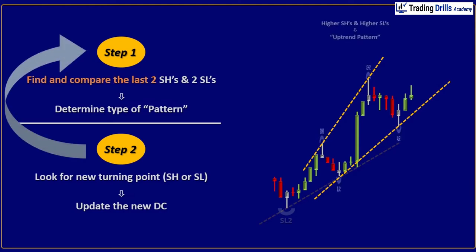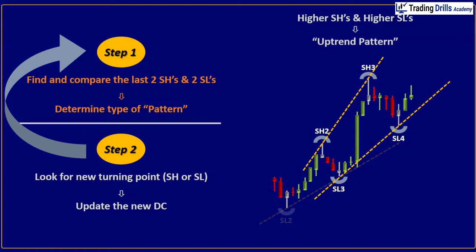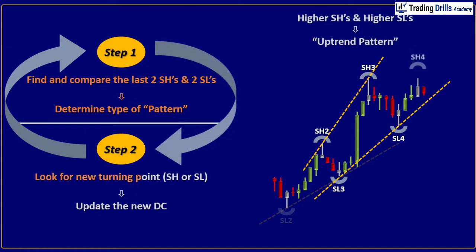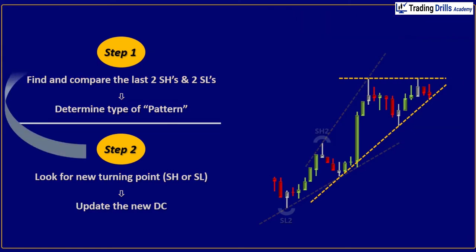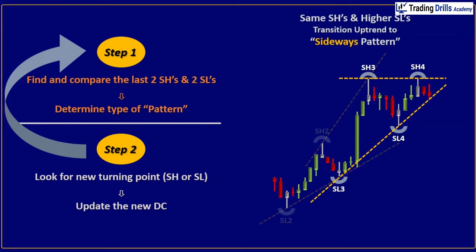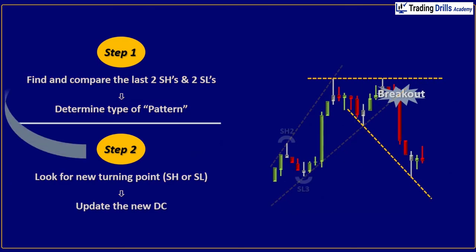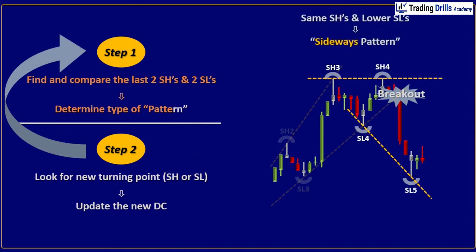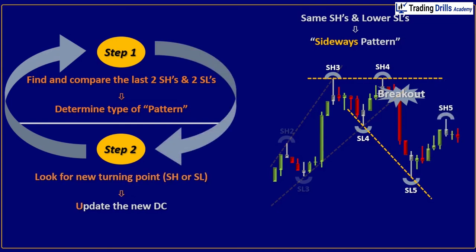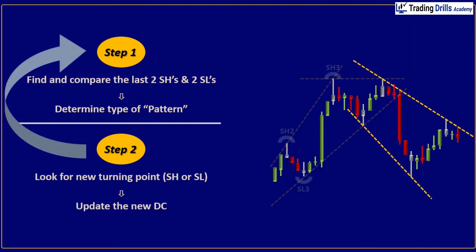So, you keep determining the type of pattern and updating the new dynamic channel. You will see how uptrend patterns are converted to sideways patterns, and sideways patterns are transitioned to a new sideways pattern, or converted to a new downtrend pattern.